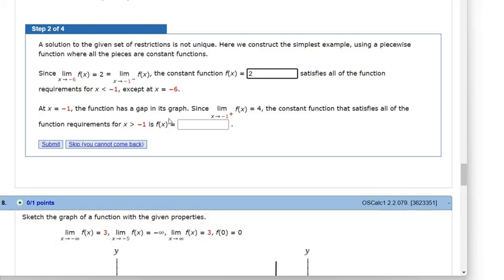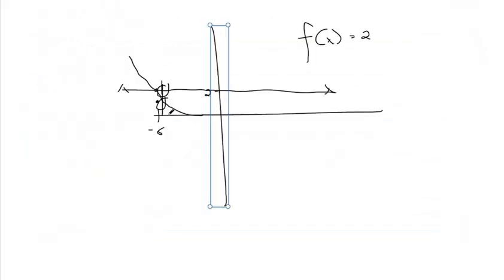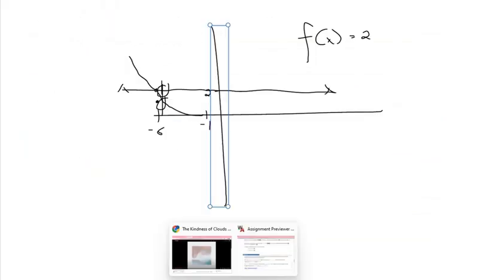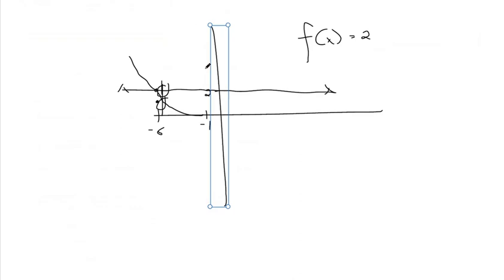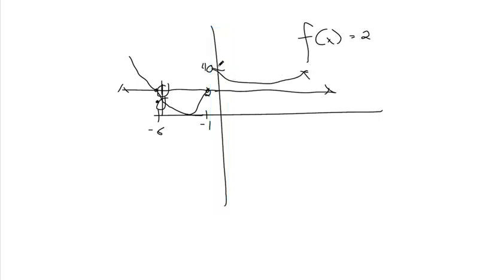At x equals negative 1, the function has a gap in its graph. As you approach negative 1 from the right, you get out y equals 4. As you approach negative 1 from the left, you get out 2. So the function is two different things as you approach x equals negative 1 — the limit from the right gives y approaching 4, and from the left, y approaching 2. Yeah, it does have a gap.